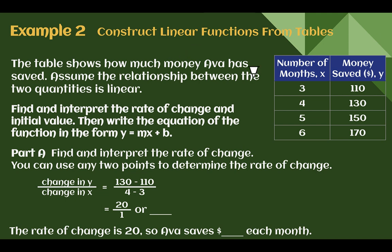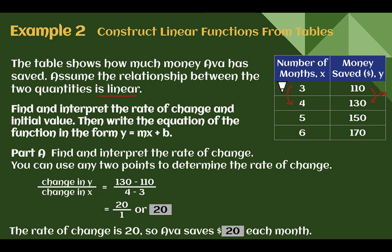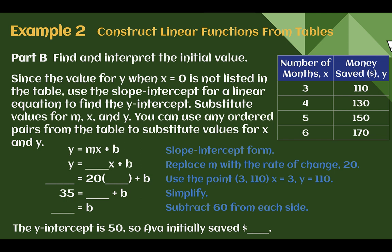Example 2: Construct linear functions from tables. The table shows how much money Ava has saved. Assume the relationship is linear, meaning as the number of months goes up, her money saved should go up by the same amount each time. Let's find our rate of change: from 110 to 130 the total went up 20, and from month 3 to 4 it went up one month — meaning she saved $20 each month. Even choosing different values: in two months she saved $40, still a unit rate of $20 per month.